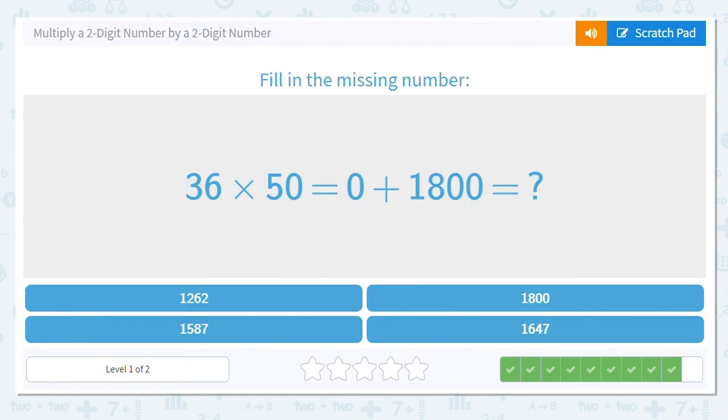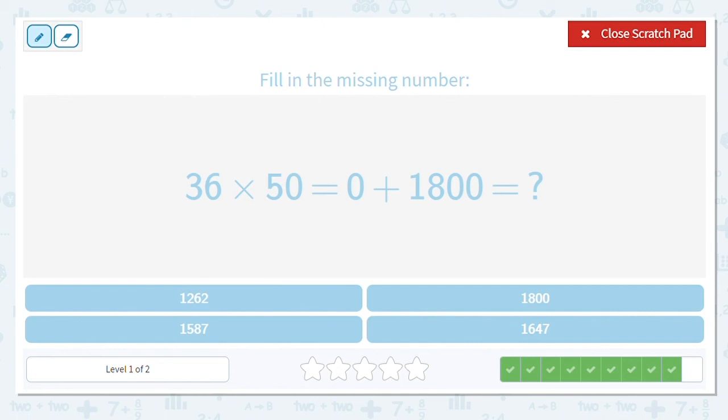Let's try one more. We have 36 times 50 equals 0 plus 1,800 equals. So nice, they gave us our partial products. So all we need to do is add it together. And what's 0 plus 1,800? It's 1,800.